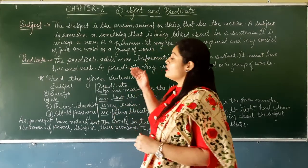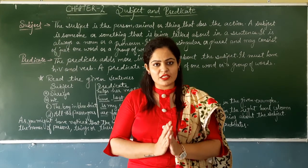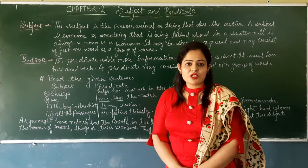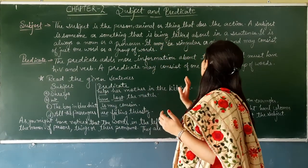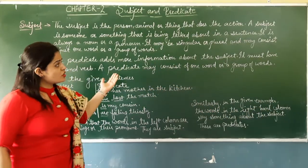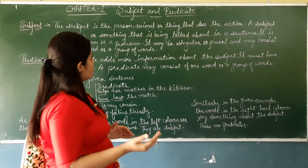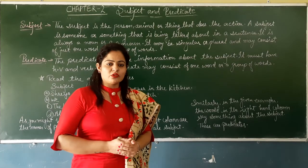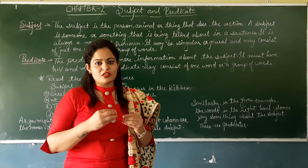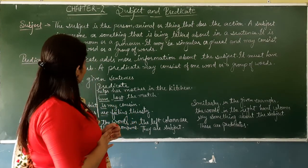Now let's read our second chapter, which is 'Subject and Predicate.' Ab hum dekhenge ki subject kya hota hai aur predicate kya hota hai. First — subject. The subject is the person, animal, or thing that does the action. Jo subject hota hai woh ek person hota hai, animal ho sakta hai, ya koi cheez ho sakti hai jo kriya karti hai. A subject is someone or something that is being talked about in a sentence. It may be a noun or pronoun, and it may be singular or plural, consisting of just one word or a group of words.